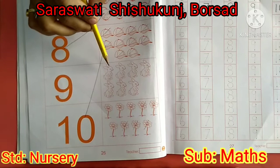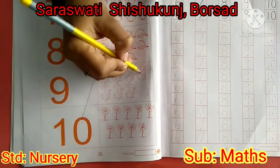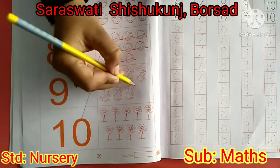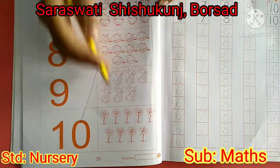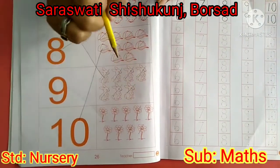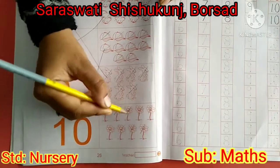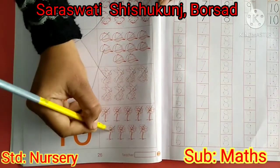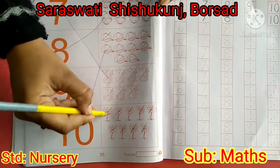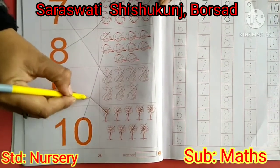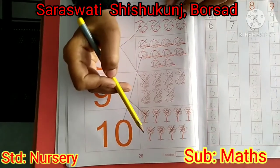Yes, rabbits. So count with me. 1, 2, 3, 4, 5, 6, 7, 8, 9. So 9 flowers, match with number 9. So you have completed page number 26. Thank you, stay tuned. Bye.